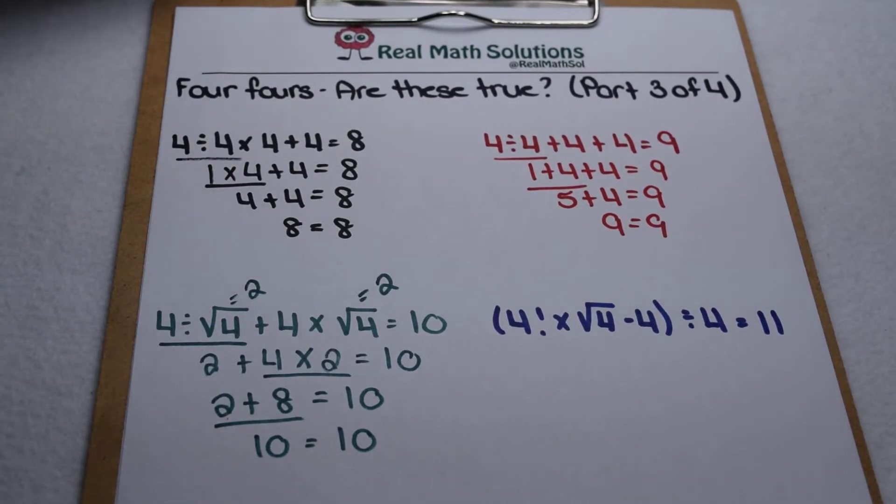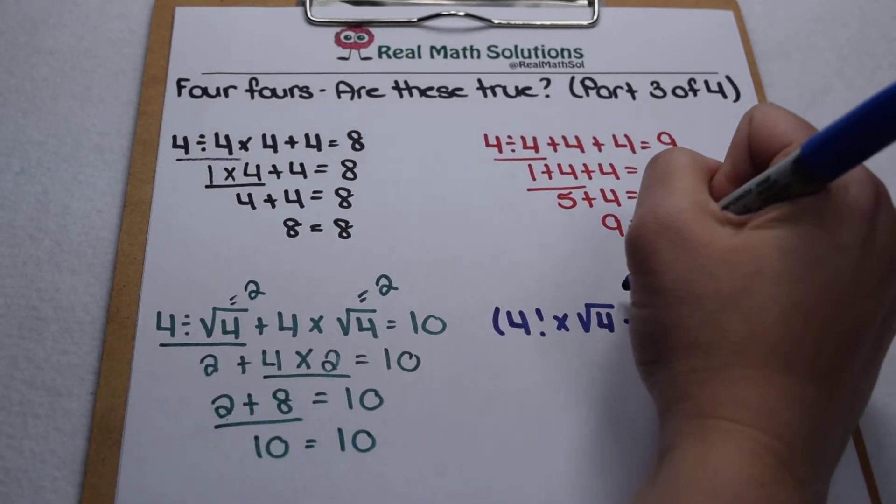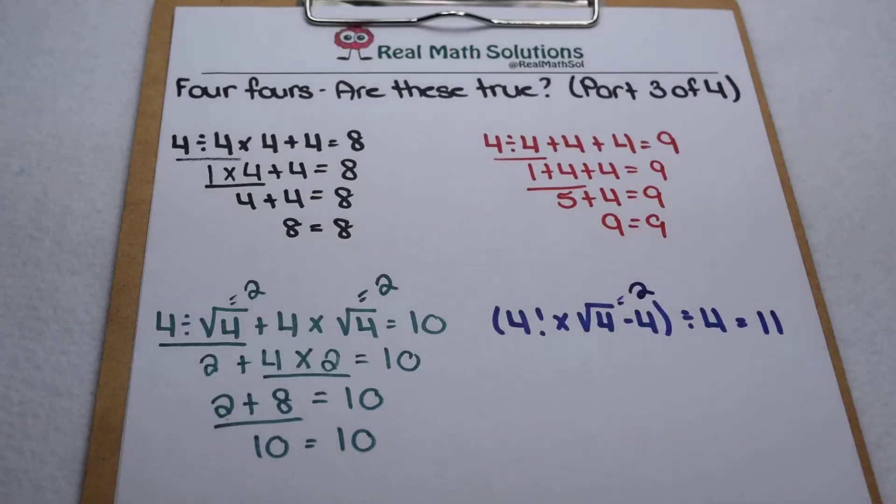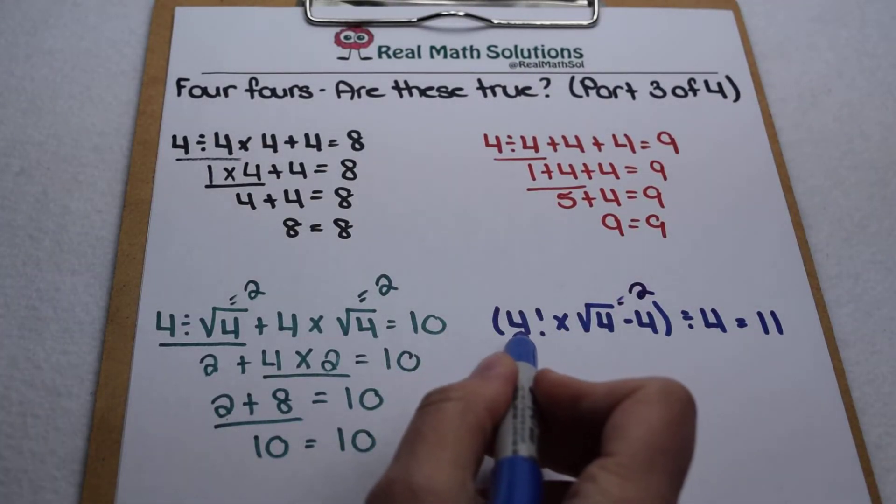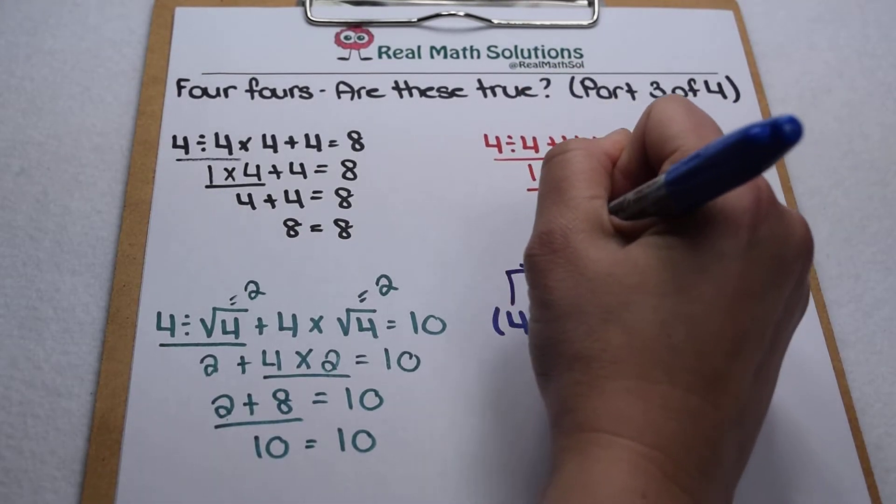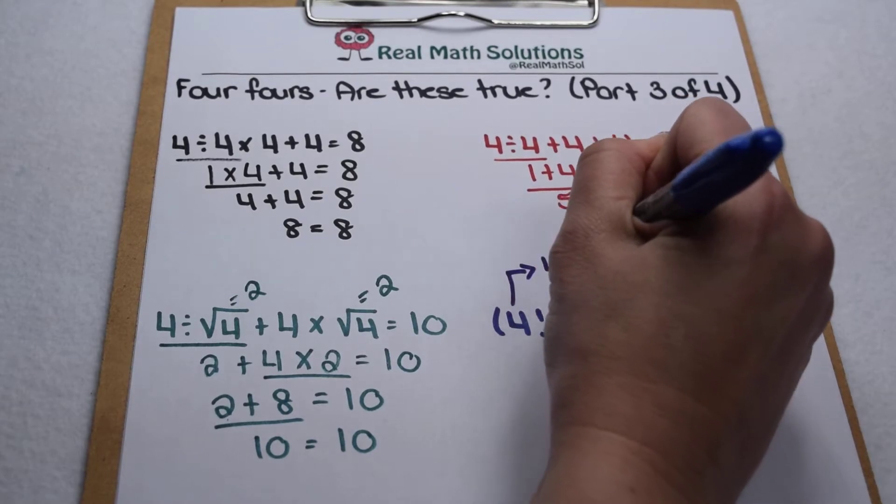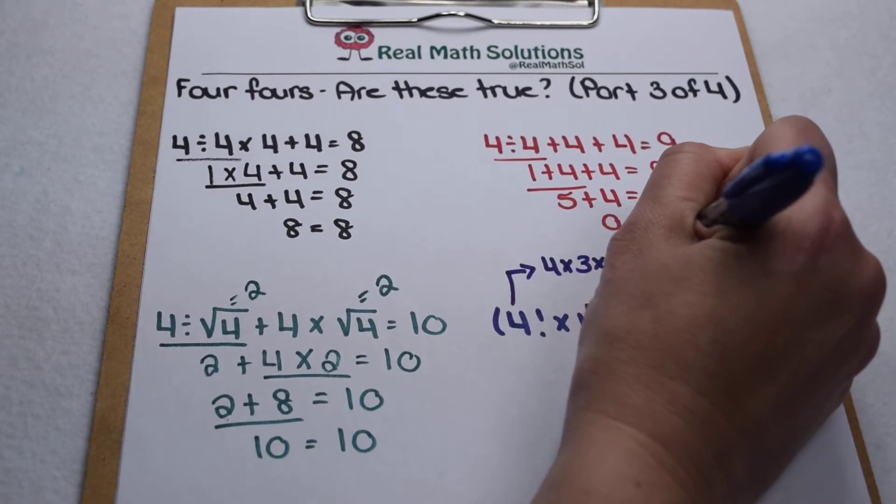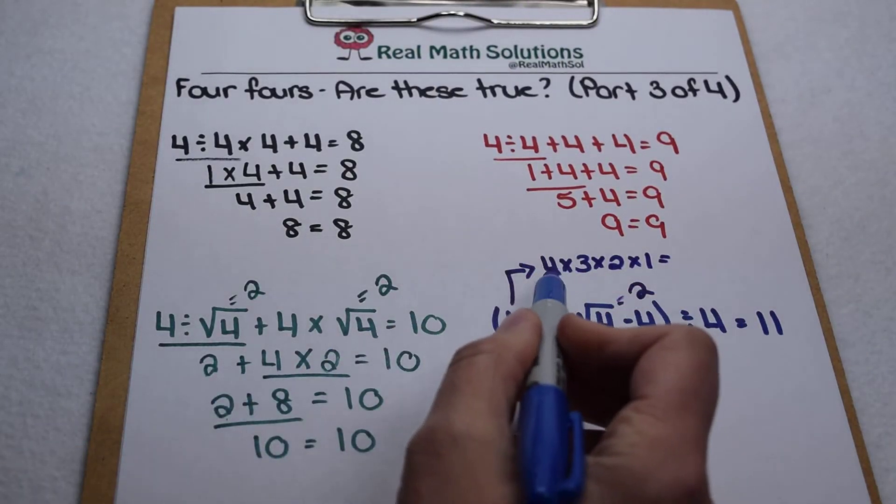Now as we go on to evaluate 11, we have the square root of 4 again, which we already know is worth 2. But now we also have a 4 factorial inside our parentheses. 4 factorial means I need to multiply 4 times 3 times 2 times 1. So 4 times 3 is 12,